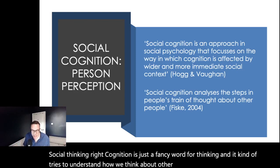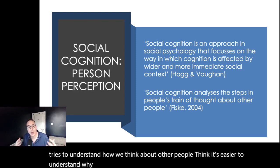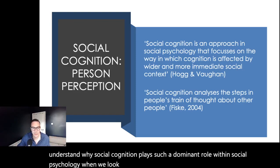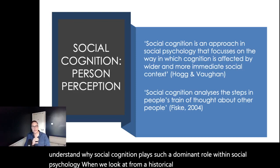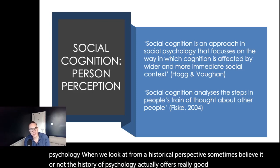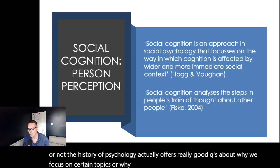I think it's easier to understand why social cognition plays such a dominant role within social psychology when we look at it from a historical perspective. Sometimes, believe it or not, the history of psychology actually offers really good cues about why we focus on certain topics or study certain things the way we do.